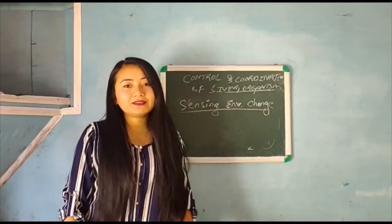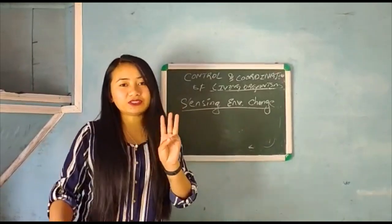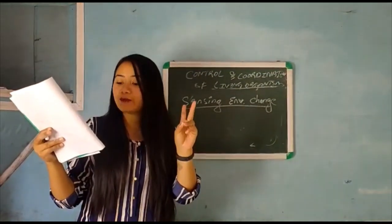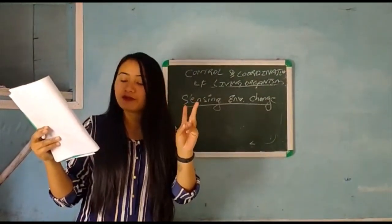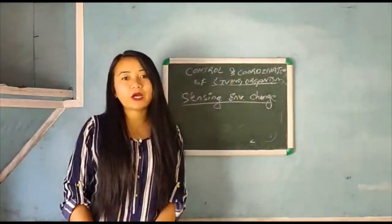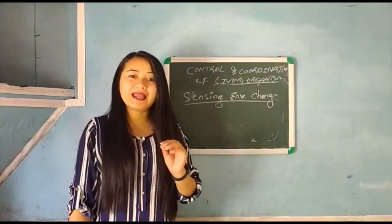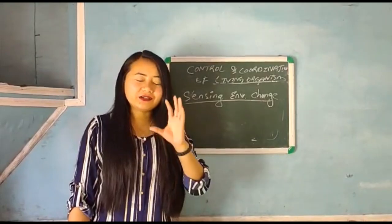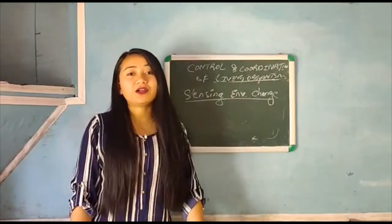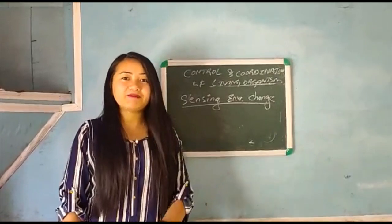Generally, plants have three components of photosensitive compounds: Phototropins, Cryptochromes, and Phytochromes. Plants can use these for light sensing.